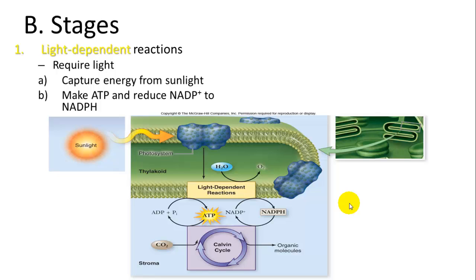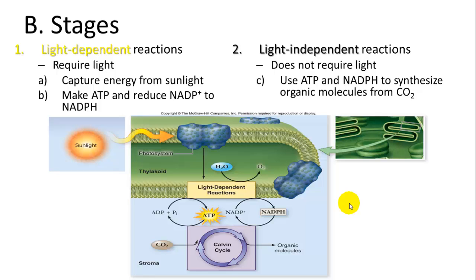The light-independent reactions used to be called the dark reactions, but they can occur in the light too, so we call them light-independent because they don't require light. They use the ATP and NADPH from the light-dependent reactions to synthesize organic molecules — stringing carbon from CO2 into sugars.